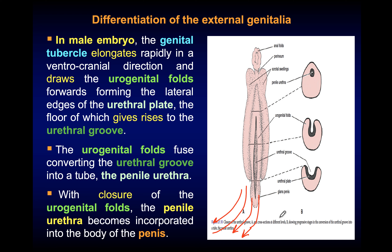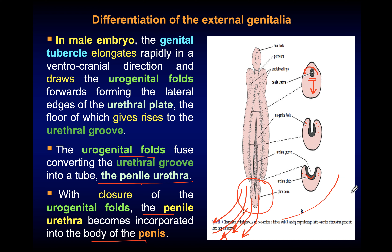As the urethral plate proliferates, the tips of the folds come close together and fuse to form the penile urethra, which is located in the middle of the penis. The urogenital folds fuse together resulting in the formation of the penile urethra. With the closure of the urogenital fold, the penile urethra becomes incorporated in the body of the penis, so this elongation results in formation of the penis with the penile urethra at its center.